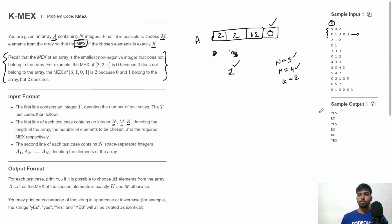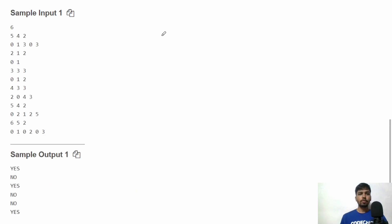For each test case we need to print one line: either YES or NO — whether it is possible to select M elements from the array of N elements such that the MEX equals K. If possible, output YES, otherwise output NO.